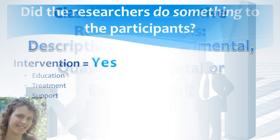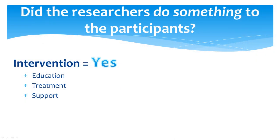First, ask yourself if the researchers did anything to the participants. More specifically, was there an intervention? Interventions include things like support groups, educational sessions, treatments for a condition, or some other variable that is being tested. If people would not normally have something without being in the study, but the researcher gives it to them to see what it will do, then that is an intervention. You may also see research texts call this a manipulation. Essentially, the researcher did something to people to provoke some kind of measurable result.